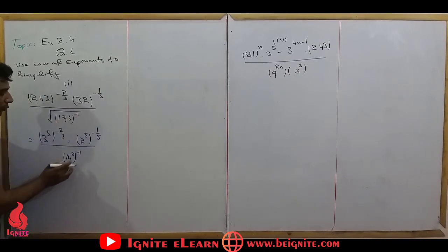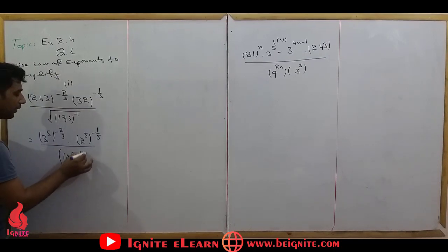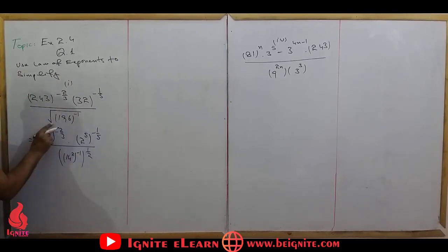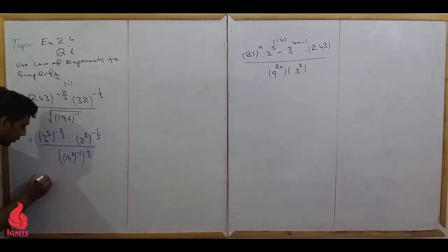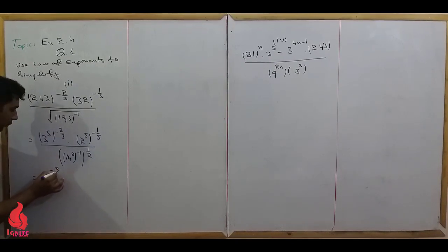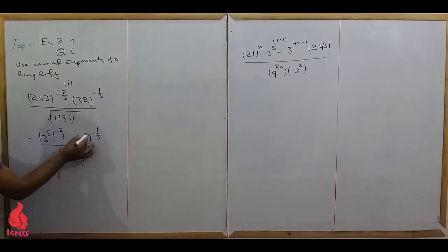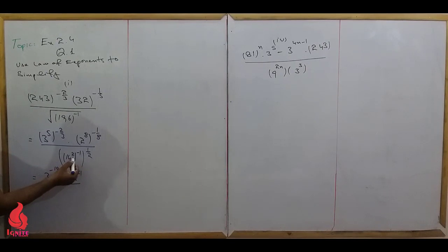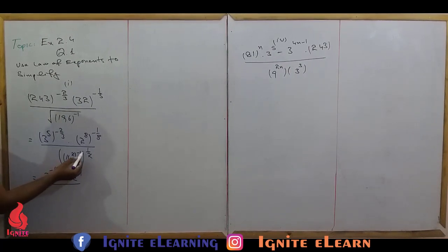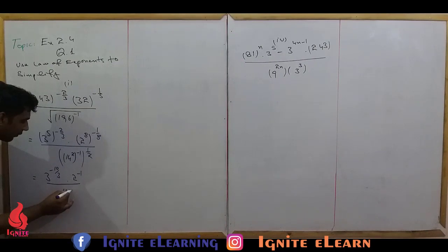Using the law: (A raise to power M) whole raise to power N equals A raise to power M times N. So 3 raise to power 5 times minus 2 over 3 — the 5 and the 3 in the denominator cancel — giving 3 raise to power minus 2. Similarly, 2 raise to power 5 times minus 1 over 5 gives 2 raise to power minus 1. Then we multiply, giving us 14 raise to power minus 1.